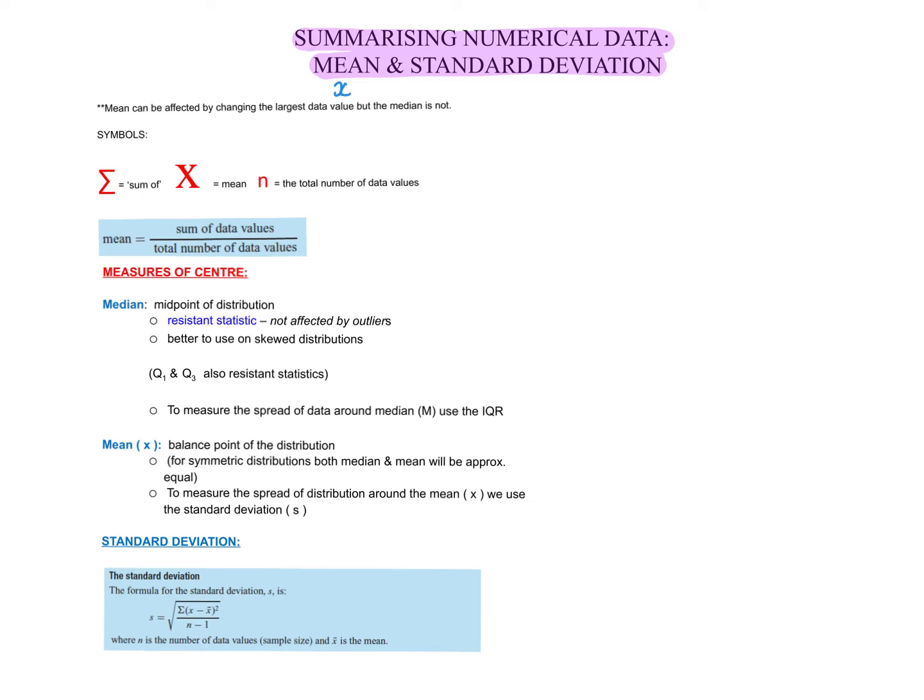So the mean is represented with an X and a line above it, and you see it like that with your calculator. And standard deviation is also listed as SX in your calculator. So we know that the mean is actually like the sum of all the numbers. So if you were working out the mean, we know you add up all the numbers.